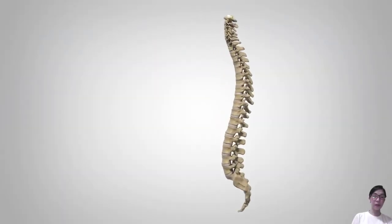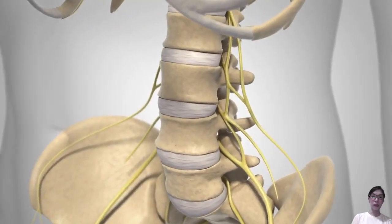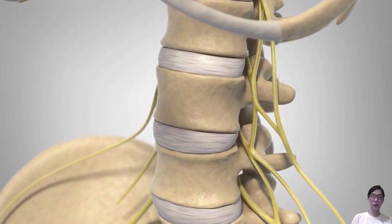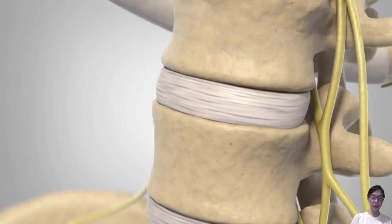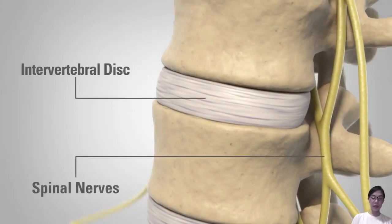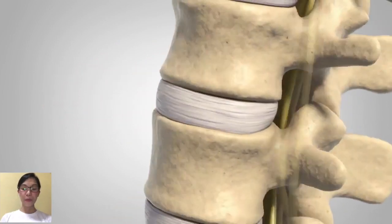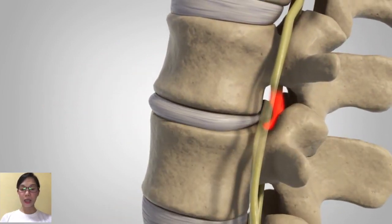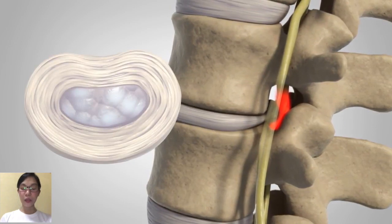There are 24 vertebrae in the spine; these vertebrae are connected by several joints which allow you to bend, twist, carry loads, and absorb shock. The main joint is a flexible cushion between two vertebrae called an intervertebral disc. The intervertebral disc is comprised of a soft, gelatinous center surrounded by a tough outer wall. When the gelatinous core pushes out through a tear in the fibrous wall, the disc herniates, adding pressure to the surrounding spinal nerves, which causes pain.